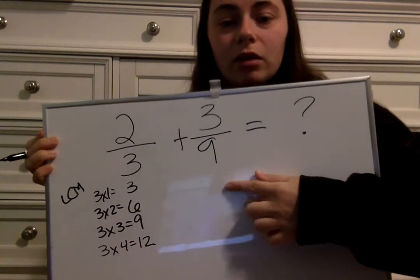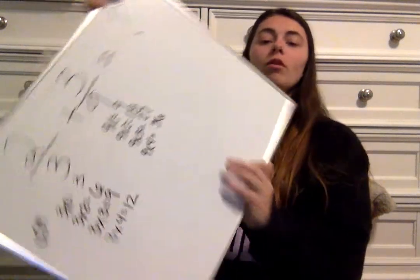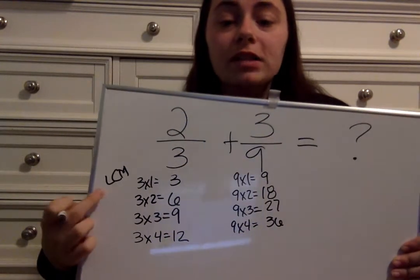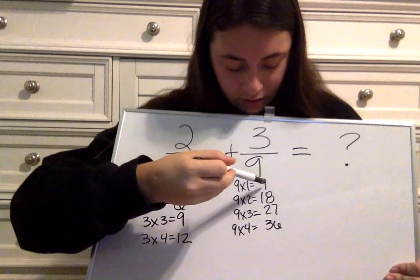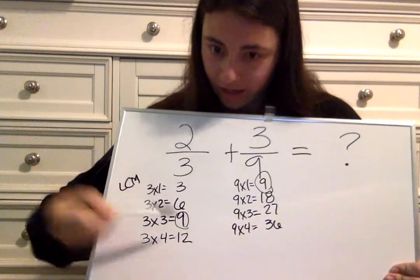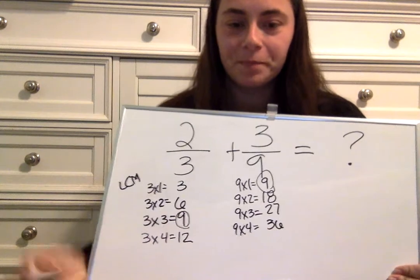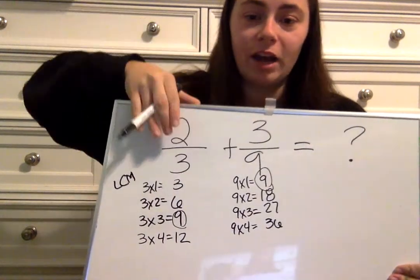Now I'm going to move over to our handy-dandy nine and do the same thing. Nine times one is nine. Nine times two is eighteen. Nine times three is twenty-seven. And nine times four is thirty-six. Right away, we're supposed to be looking for the least common multiple — a number that both of these factors have in common. And look right here: I see nine and nine. Beautiful. So we already have our common denominator of nine, and now we just need to change three.